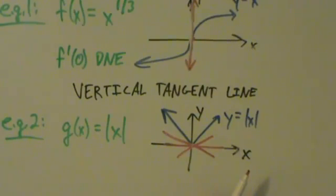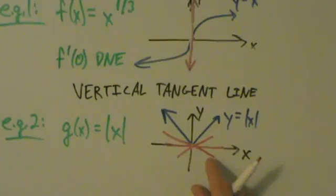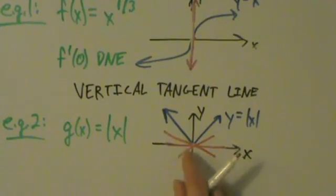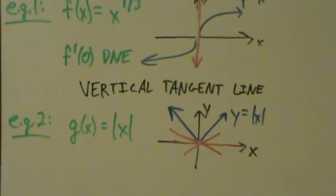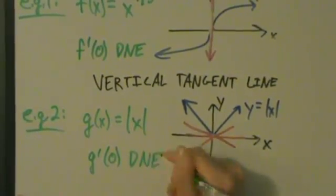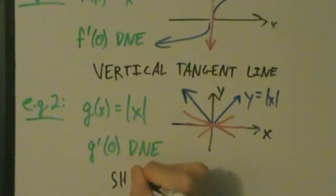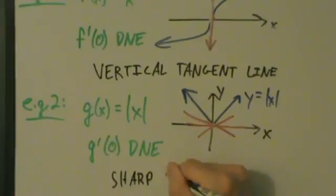You can have a left derivative and a right derivative, but the problem is they're not going to be the same thing here. We talked about one-sided derivatives — you can have a left derivative and a right derivative at 0, but the regular derivative doesn't exist at 0. So g'(0) does not exist. This is an example of a sharp point.